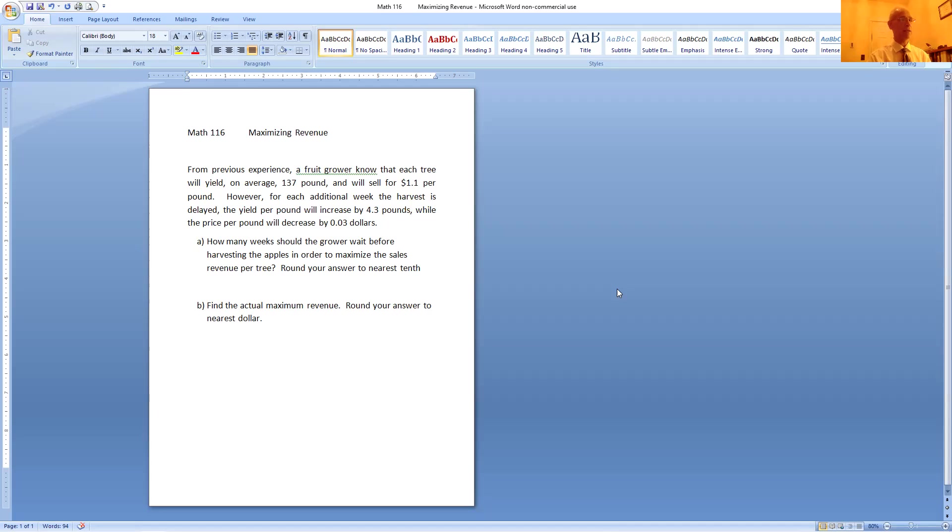Part A is asking how many weeks should the grower wait before harvesting the apples in order to maximize the sales revenue per tree. Round your answer to the nearest tenth. Part B is saying find the actual maximum revenue.